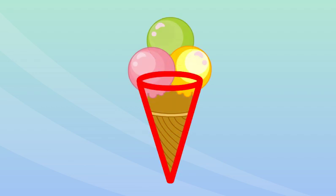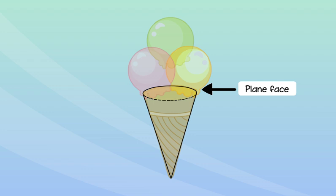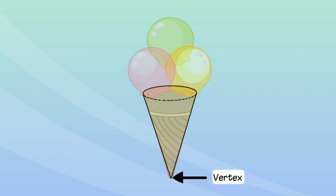Let's look at the ice cream cone once again. It has one plane surface, one curved face, one vertex and one edge.